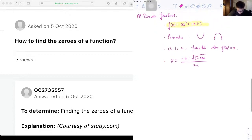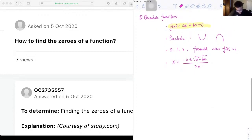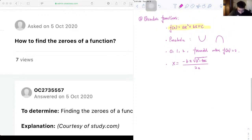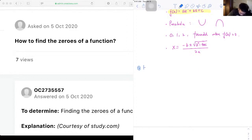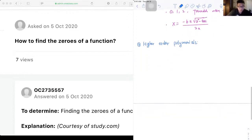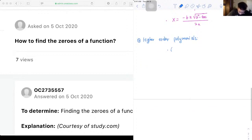So I think that's how we find the zeros for quadratic functions. So now let's go to the next one, which are the higher order polynomials.